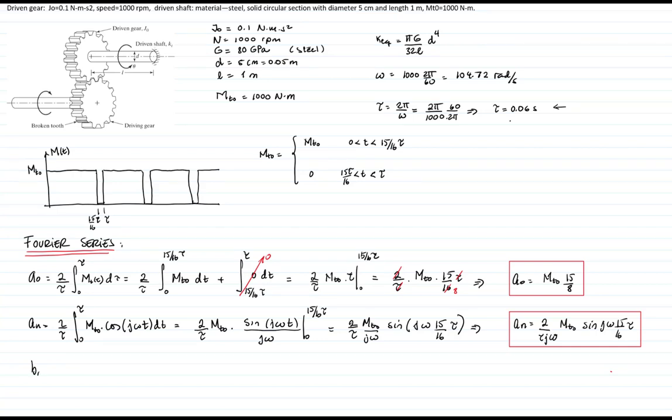Finally, bₙ is 2/τ times the integral from 0 to τ of the moment times sine(j ω t) dt. That will be 2/τ m₀ times the integral of sine(j ω t) divided by j ω, evaluated from 0 to 15/16 τ.